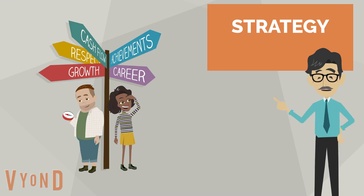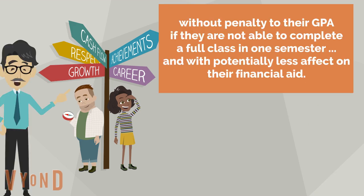By being more flexible in how we assess achievement and how we provide units for workplace learning, these students could be allowed to receive the credit that they deserve for all of the work that they have completed to date — without penalty to their GPA if they are not able to complete a full class in one semester, and with potentially less effect on their financial aid.